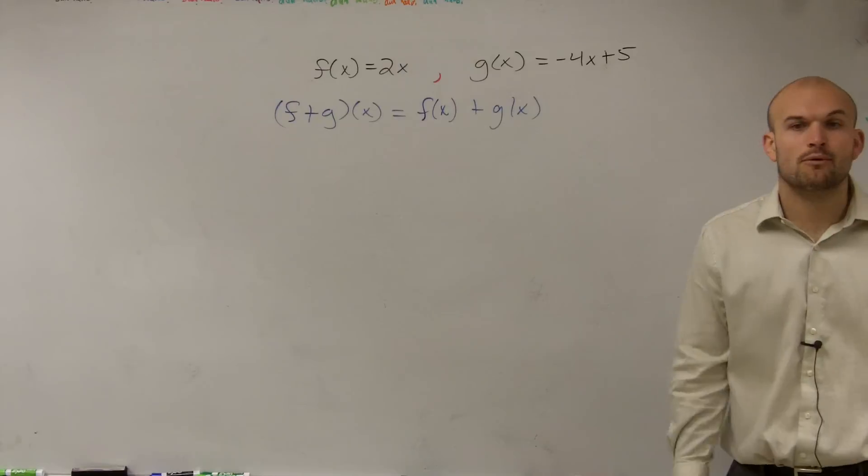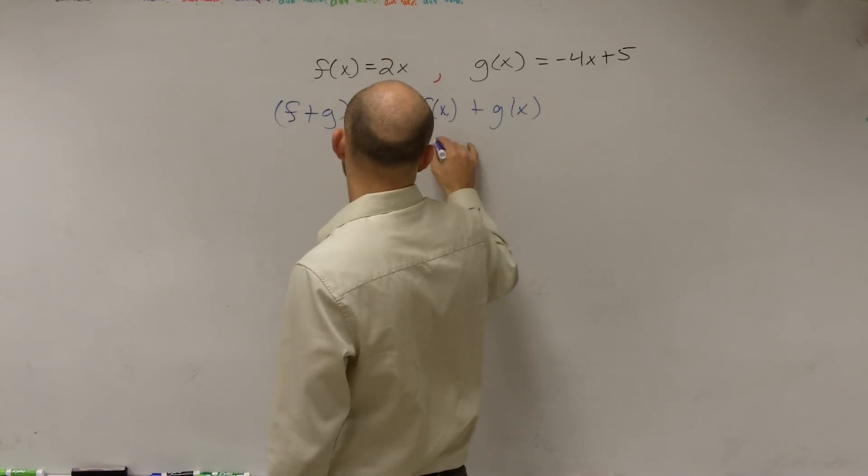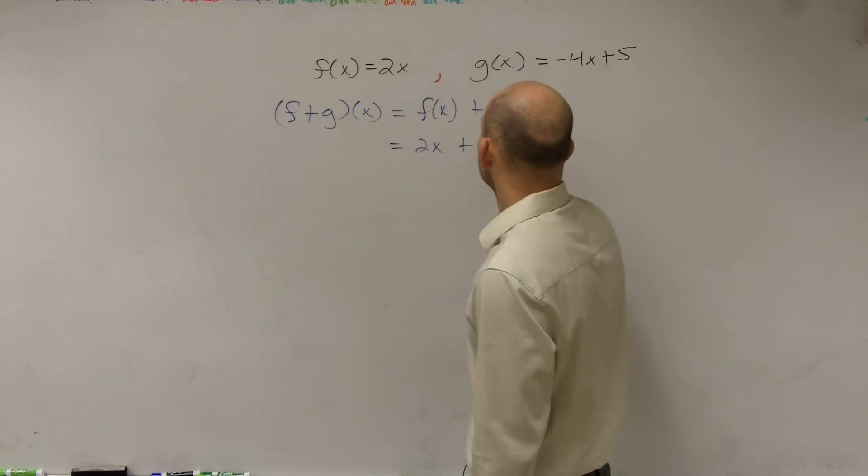So now we can say, what does f of x equal and what does g of x equal? Well, f of x equals 2x, and g of x equals negative 4x plus 5.